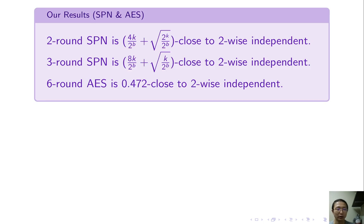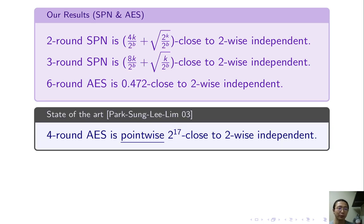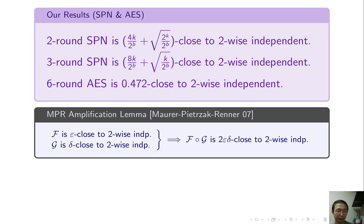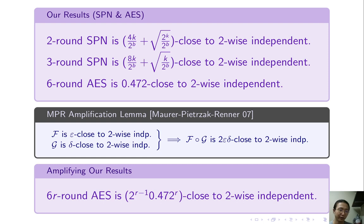Compare with previous work. The state of art PSSL shows 4 round AES is pointwise close to 2-wise independence. Our result doesn't imply PSSL because they are considering a stronger notion of closeness. And PSSL doesn't imply our result because our bound is much tighter. Because our bound is tight enough, in particular, because it's smaller than a half, it can be amplified. By increasing the number of rounds, AES will be exponentially close to 2-wise independence.